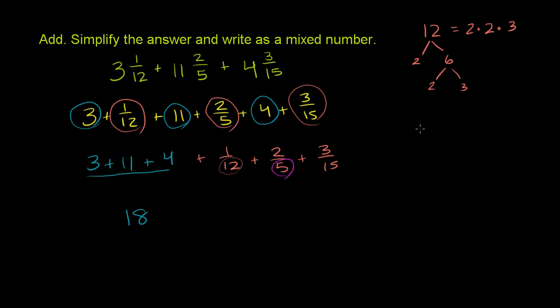Now if we do 5, prime factorization of 5, well 5 is just 1 and 5. So 5 is a prime number. It is the prime factorization of 5. There's just a 5 there. This 1 is kind of useless. So 5 is just 5.